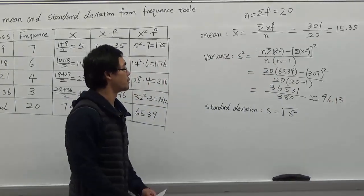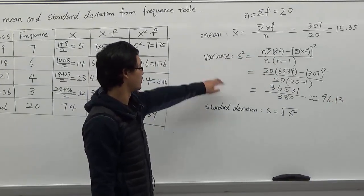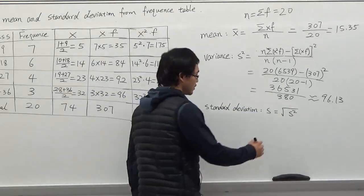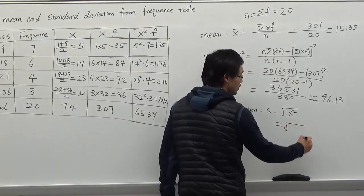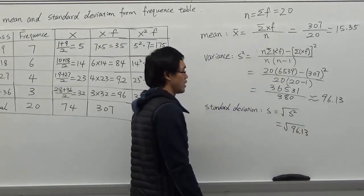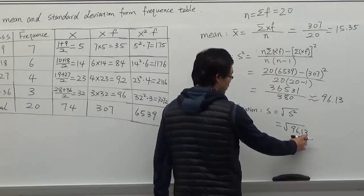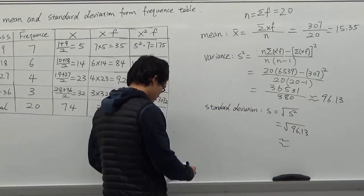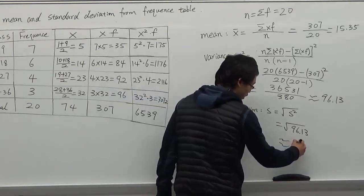So after we compute the variance, now we substitute the variance to the standard deviation formula. Equals to square root of 96.13, which is equal to 9.80.